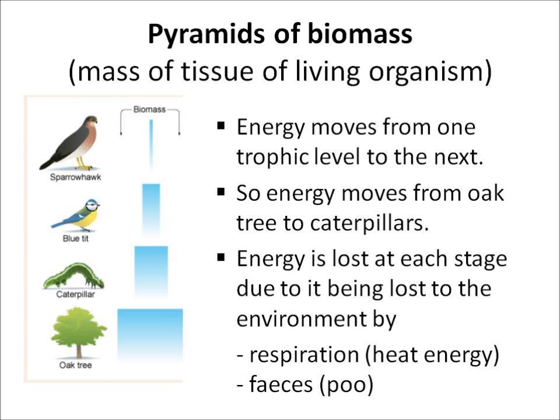We're now looking at how energy moves up the food chain, up a food web. At each level, energy is lost as it moves from one trophic level to the next — for example, from an oak tree to a caterpillar, or from a caterpillar to the blue tits. Energy is lost in two main ways: it's lost by respiration, because living things produce heat energy as they're living, and it's also lost in excretion — in their faeces and urine.